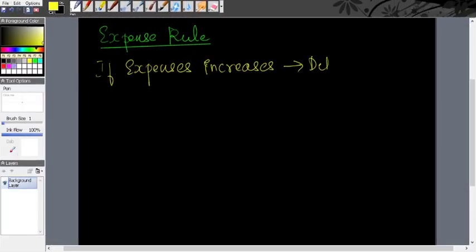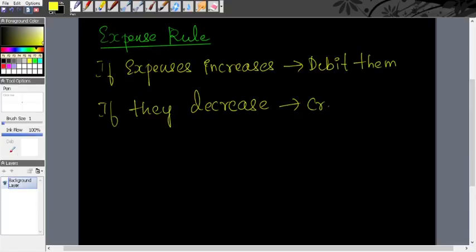Expense rule. The expense rule says that if there is any increase in expenditure, the same should be debited, whereas if there is any decrease in expenditure, it shall be credited.